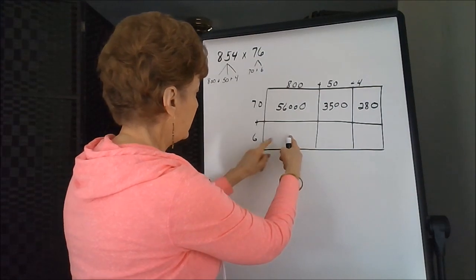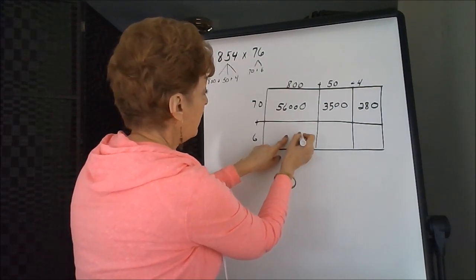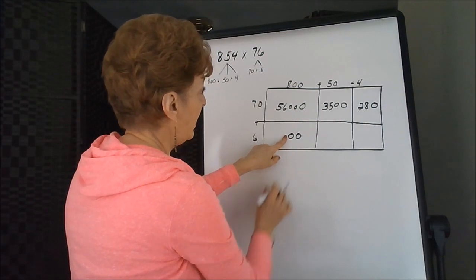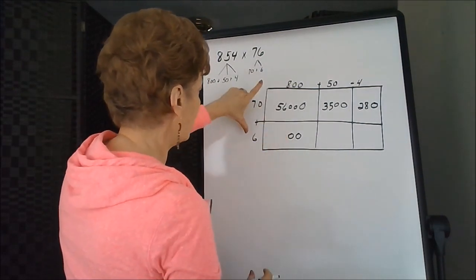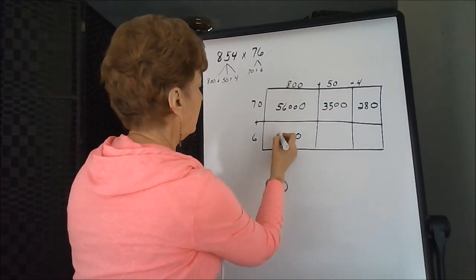800 times 6. Well, let's get our zeros out of the way. There's two of them in the 800. Now we can just go 6 times 8 is 48.